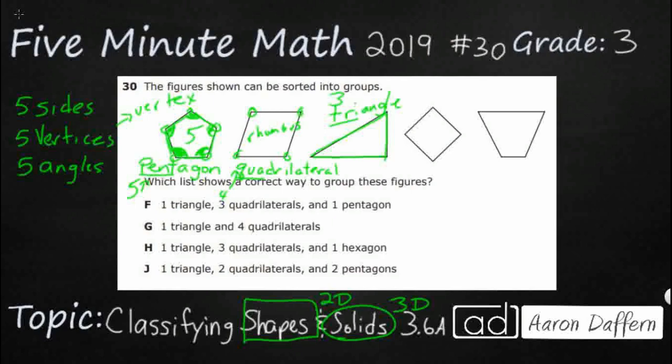And so we have over here a square. That's pretty easy. But you notice square doesn't show up down here. We need to classify it by its largest group. And it is also going to be a quadrilateral because it's got four sides, four vertices, four angles. So a square is a special type of quadrilateral just like a rhombus is a special type of quadrilateral.